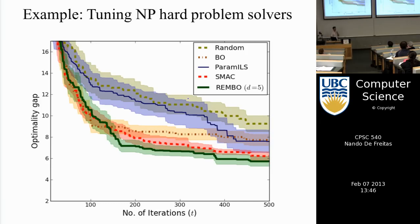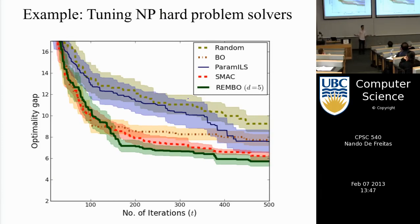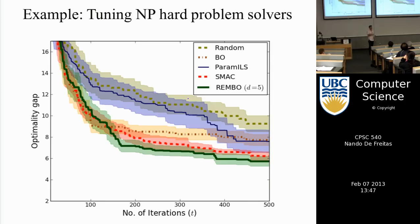Another example: algorithms for solving SAT or mixed-integer programming — packages downloaded by thousands of people — often have many free parameters. One such solver had 76 parameters. Imagine sitting there tuning all of them. We've already seen this with cross-validation: you had to choose delta values and try each one. Bayesian optimization can do this automatically, replacing the user in that process.